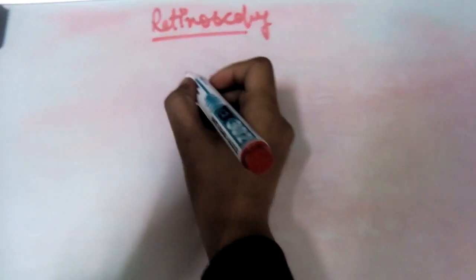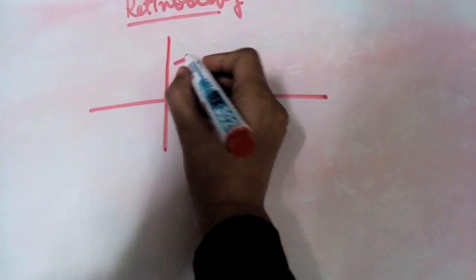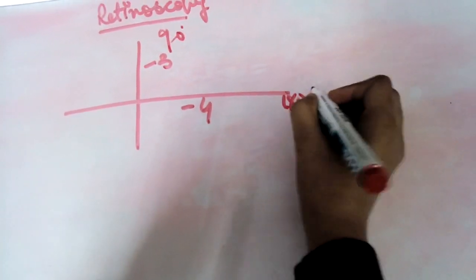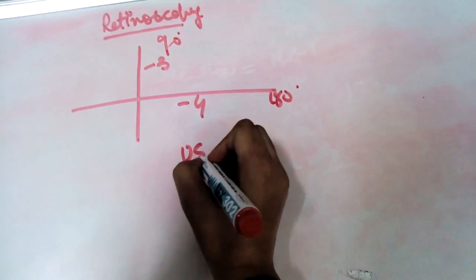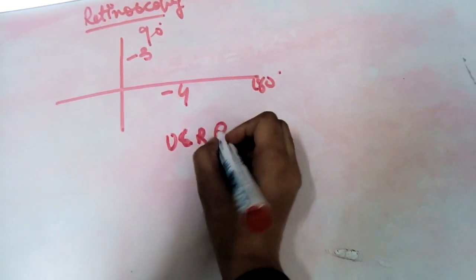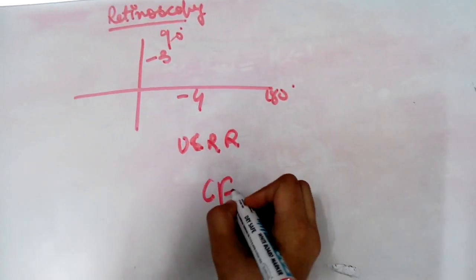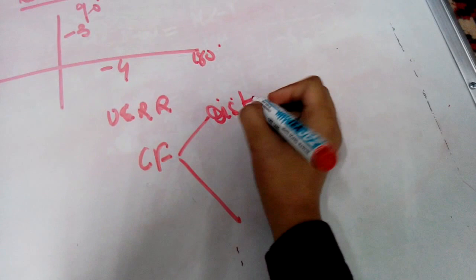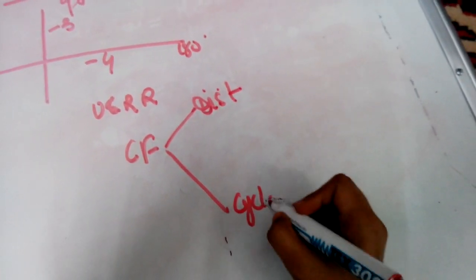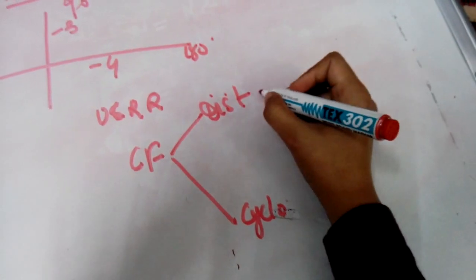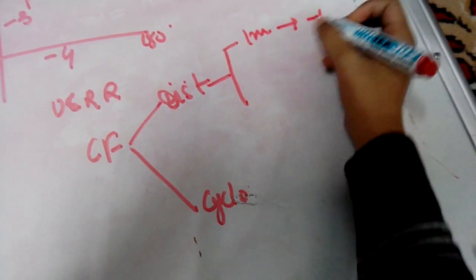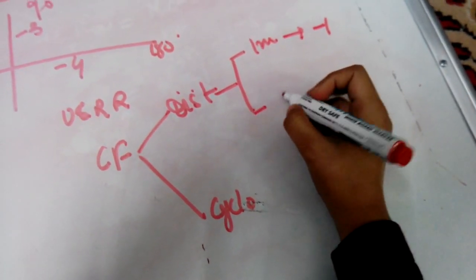Now, with that knowledge, let's move forward with an example. Suppose we have readings of minus three at 90 degrees and minus four at 180 degrees. These are uncorrected retinoscopy readings, so we need to apply a correction factor. The correction factor depends on two things: the working distance and the cycloplegic used. For a distance of 1 meter, the correction factor is minus one. For 2/3 meter, it is minus 1.5.